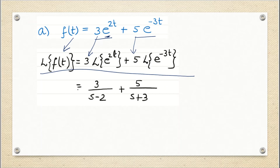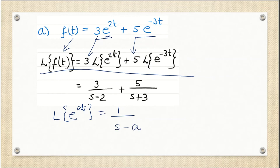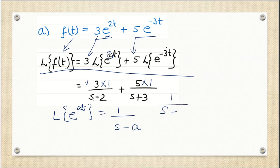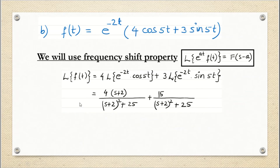We have seen that the Laplace transform of e^(at) is 1/(s − a). For the first term, a = 2, so we get 3 × 1/(s − 2) = 3/(s − 2). For the second term, a = −3, so we get 5 × 1/(s − (−3)) = 5/(s + 3). That is our answer.